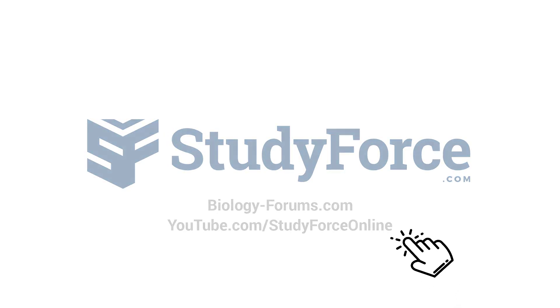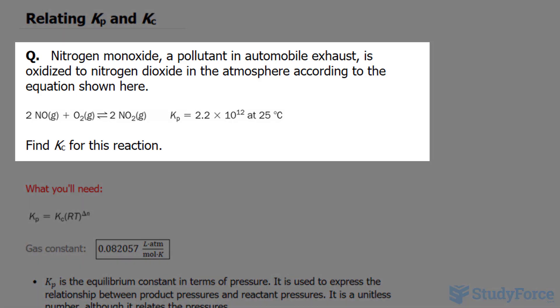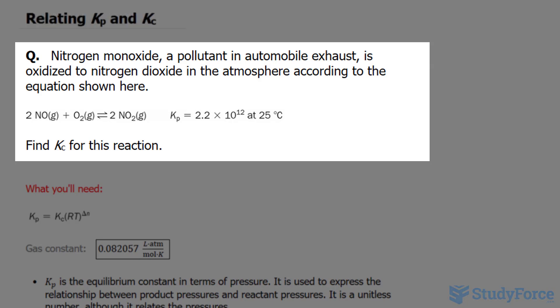In this lesson, we'll go through two examples on how to relate Kp and Kc. We'll discuss what these terms are in a moment. The question reads: nitrogen monoxide, a pollutant in automobile exhaust, is oxidized to nitrogen dioxide in the atmosphere according to the equation shown here. We're expected to find the equilibrium constant related to the concentration.